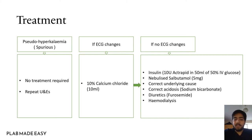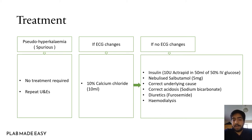The next step is insulin — 10 units of Actrapid human insulin and 50 mls of 50% IV glucose. After that, nebulized salbutamol, and then correcting the underlying cause, which can include acidosis corrected with sodium bicarbonate or diuretics such as furosemide.